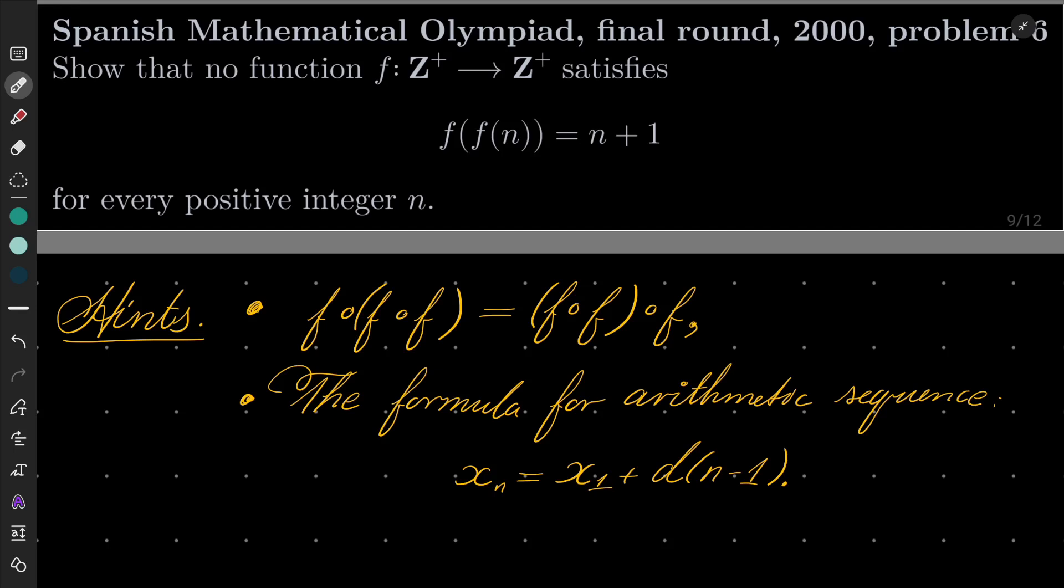We wish to show that no function f from the set of positive integers Z+ into itself satisfies this functional equation: f(f(n)) equals n plus 1 for every positive integer n.